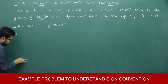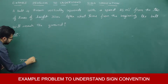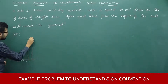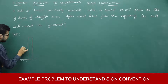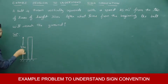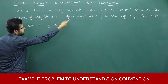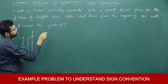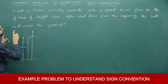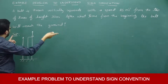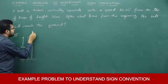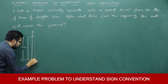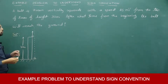Let me draw the situation. There is a tower, height of the tower is 30 meters. The ball is thrown vertically upwards with a speed of 25 meters per second from the top of the tower. The ball initially goes up and then falls, and the ball will reach the ground. So we need to find the time.